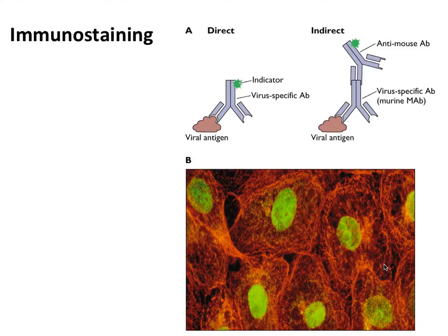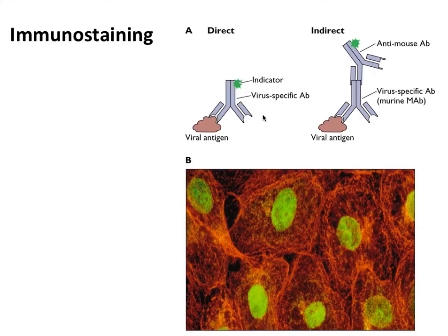We use antibodies extensively in virology — one application is to detect the presence of viruses and viral proteins in cells, using a procedure called immunostaining. In this procedure, an antibody directed against a viral protein — made by immunizing animals with viruses or viral proteins — is incubated with infected cells and then used to detect the viral protein by the presence of the antibody. Panel B shows a cell monolayer infected with a herpesvirus, stained with an antibody to a herpesviral protein. There are two ways to detect the antibody binding: directly or indirectly.